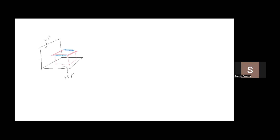First we'll draw the XY line. For a cube, all sides are equal, so we draw a square with side 35mm. The height will also be 35mm. This is the front view and this is the top view. The observer is watching from here. So this is our first sum done.